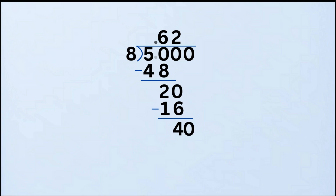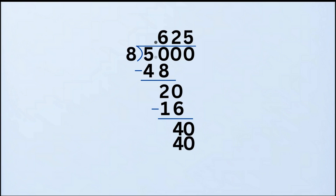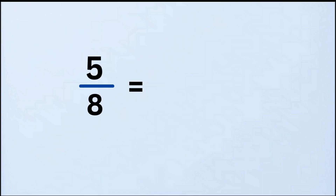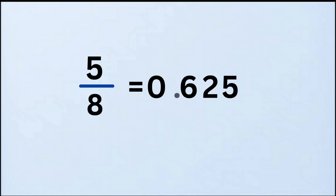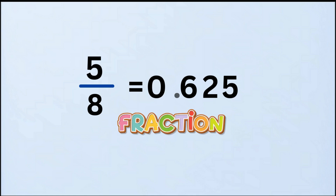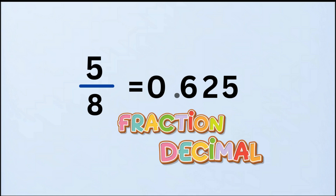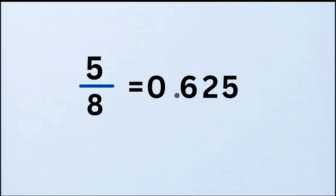Ask: how many times does 8 go into 40? That's 5 times, because 8 times 5 equals 40. Write 5 in the quotient. Subtract: 40 minus 40 equals 0. So 5 eighths as a decimal is 0.625. And that's how we turn fractions into decimals, one step at a time. Thanks for watching Pink Grade — keep practicing, and you'll get even better at math. Remember, stay pink!